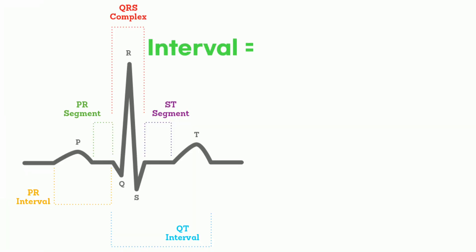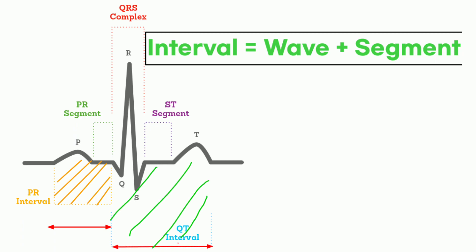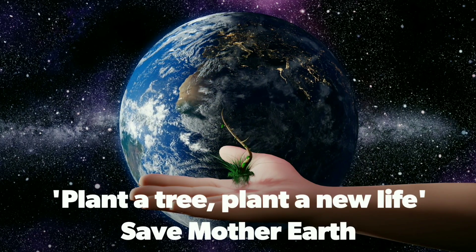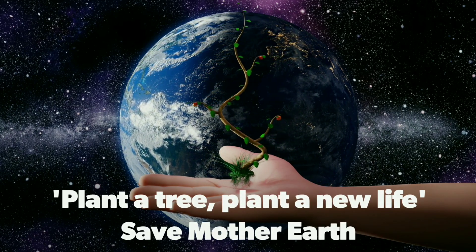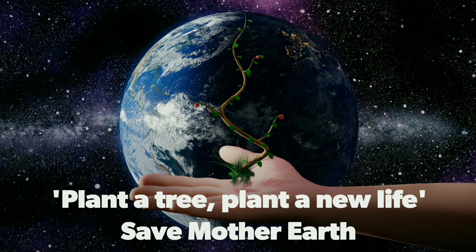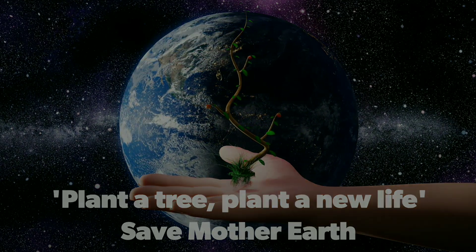An interval is a wave plus the next segment. So the PR interval is the P wave plus the PR segment, and the QT interval is the QRS complex plus the ST segment. I hope you liked part one of this ECG series — please subscribe, stay tuned, and click the bell icon so that you're notified for the upcoming parts.